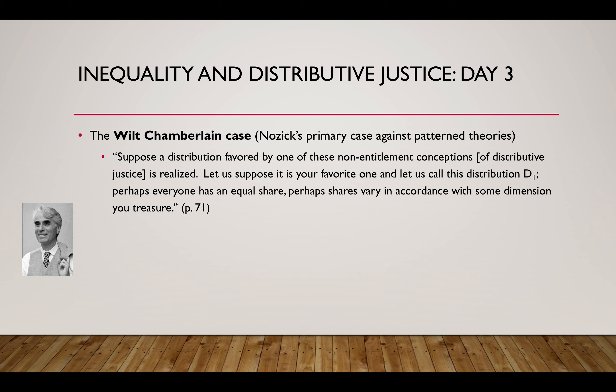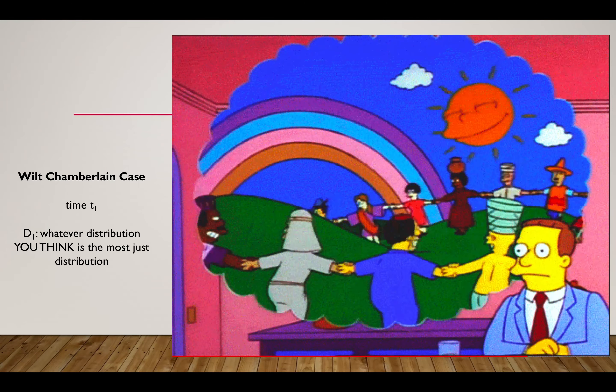Suppose a distribution favored by one of the non-entitlement conceptions of distributive justice is realized. Suppose it's your favorite one — call this distribution D1. Perhaps everyone has an equal share, or perhaps shares are in accordance with some dimension you treasure. Nozick's idea is: at the start, imagine that everything is as you think it should be. So at time T1, we have distribution D1 — whatever distribution you think is the most just, that's what obtains.